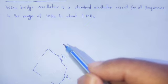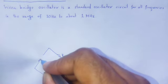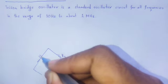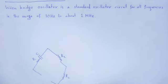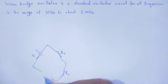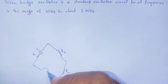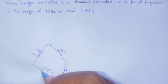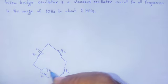The Wien Bridge arrangement consists of resistors and capacitors. One arm is the combination of resistor plus capacitor R and C in series, and another arm is the combination of resistor and capacitor in parallel.